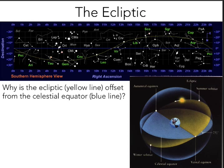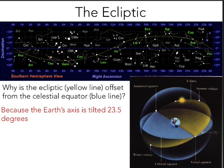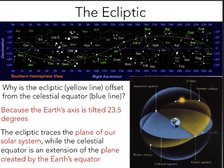To sum up: the Earth's axis is tilted by 23.5 degrees, and that's the cause of the offset between the ecliptic and the celestial equator. The ecliptic is actually the plane of our solar system — the celestial equator is an extension of the plane created by the Earth's equator, and the ecliptic is the plane that connects the Earth, the Sun, and all the other planets in our solar system.